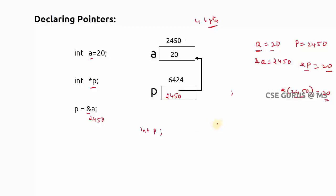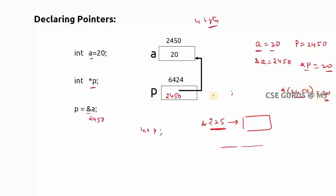In real-time examples, sometimes you don't want the value directly — you want to get it via a particular address. A good analogy: when you want a particular TV channel, you type the channel number on the remote — say 225. The TV displays that channel identified by that number. The number is like the address. You are referring with a particular ID, and what is identified with that number gets displayed — similar to referencing with a memory address.